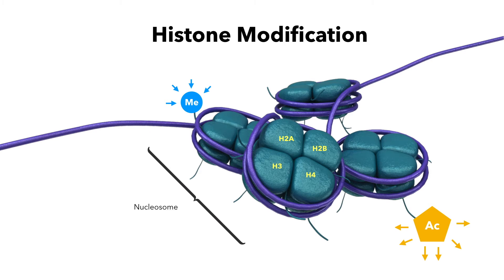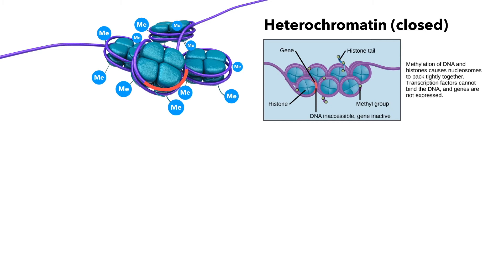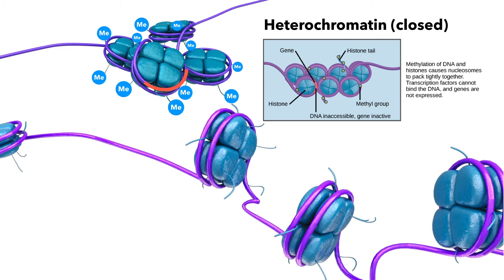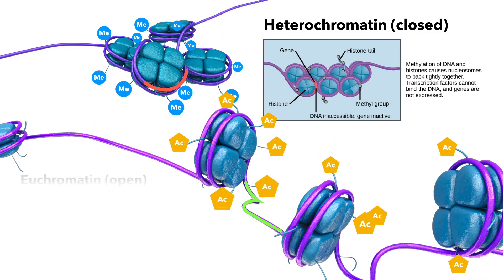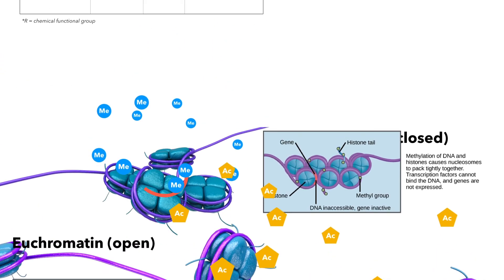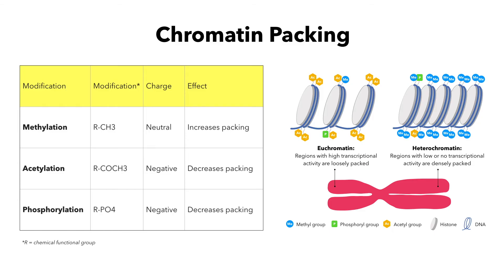Some histone methylation events have also been associated with transcription activation and others with gene silencing. One important aspect of histones is that they can be changed to alter how much packing the DNA is capable of. There are several modifications that affect how well DNA is packaged. The basic regulation is done via groups of atoms that are at the ends of histones. These can be of several types and will have a positive or a negative charge that either track them together or force them apart.